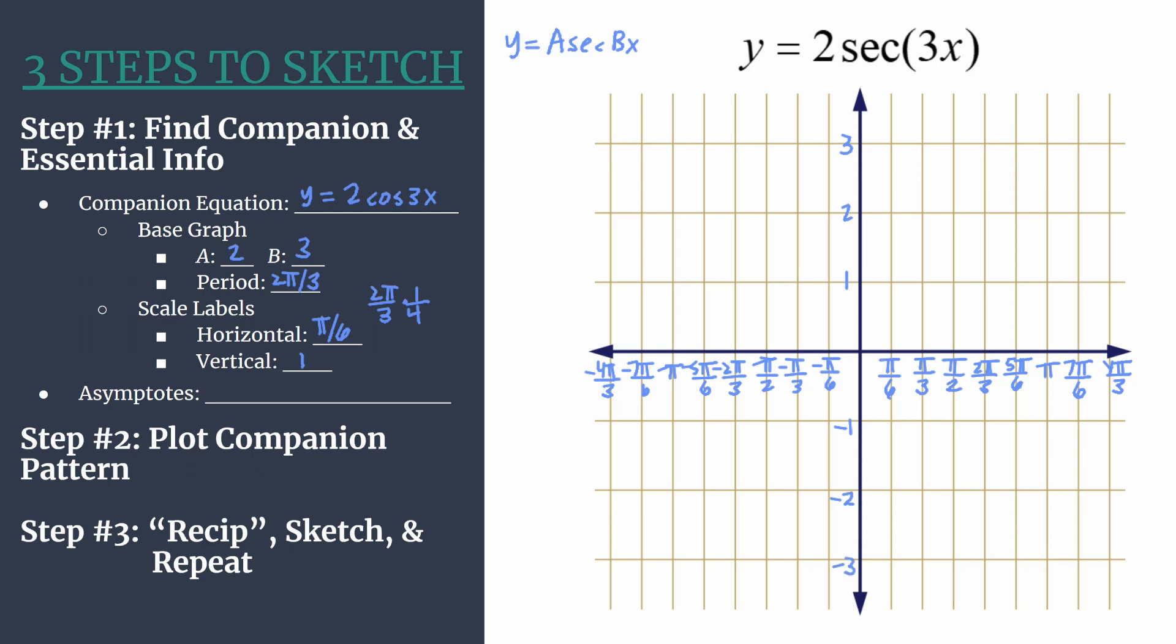Now we have all the analysis done for our companion equation. Before we move on to step 2, I like to find the asymptotes equation for our final secant graph. The quick way to do it is to take your inputs of your secant function, so that's 3x, and set them equal to the parent asymptotes of the secant graph.